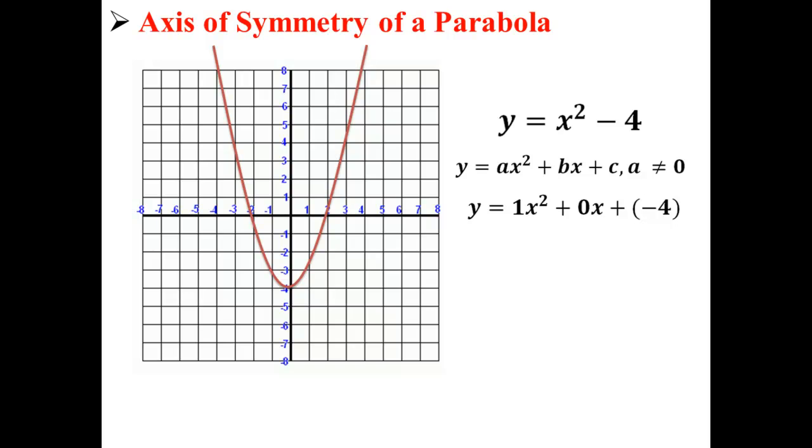As you can see, those are both the exact same equation written slightly differently. The axis of symmetry of a parabola is x equals negative b over 2a. Now that we have a and b, we can plug those things into the equation.